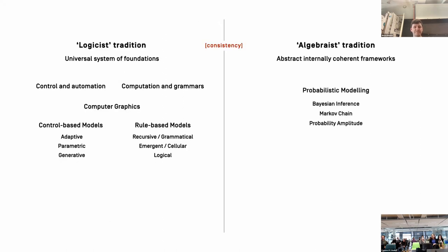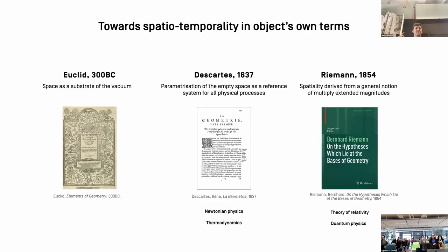Quantum theory also relies entirely on probability theory. As Feynman would say, to calculate the probabilities of an event is actually the only thing that nature permits us to do. There was also another shift towards abstraction needed to make quantum physics and relativity possible: a radical rethinking of the conception of space. In 1854, Riemann's theory separated the notions of topological and metric structure of space through the concept of the manifold, paving the way towards contemporary physics.